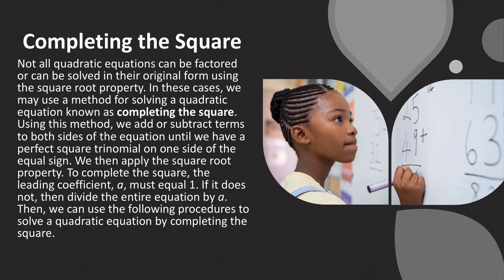Completing the square: not all quadratic equations can be factored or solved using the square root property. In these cases, we use a method called completing the square, where we add or subtract terms on both sides until we have a perfect square trinomial on one side. To complete the square, the leading coefficient a must equal one; if it does not, divide the entire equation by a first.